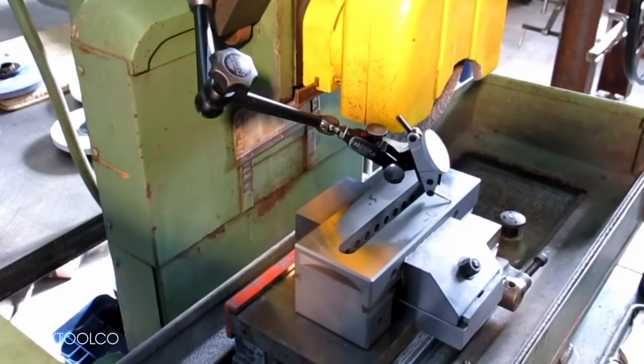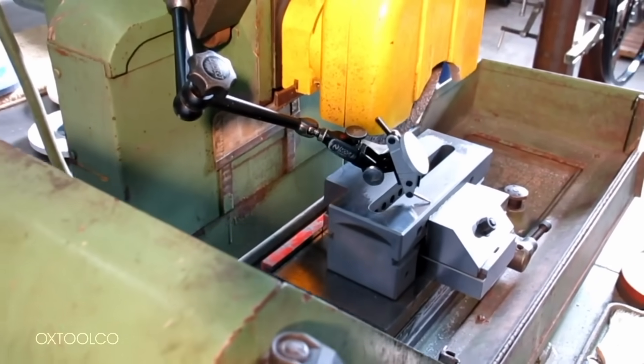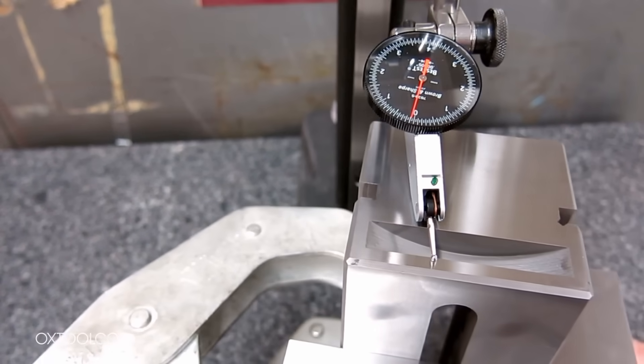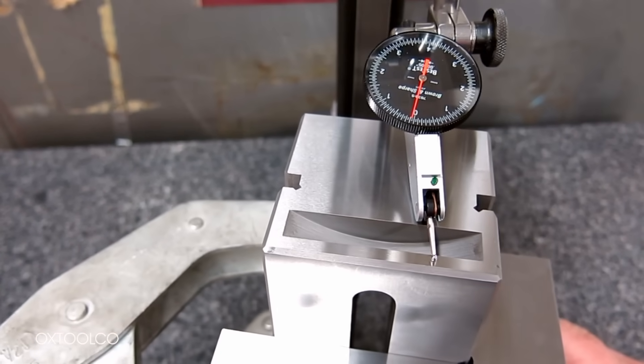Surface grinders can easily produce flat surfaces down to a 2 micron surface variance. This process is typically used to produce precision parts, precision fixtures, measurement equipment, and tooling.